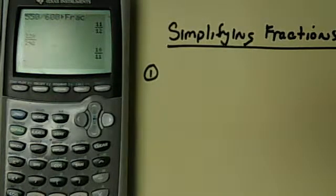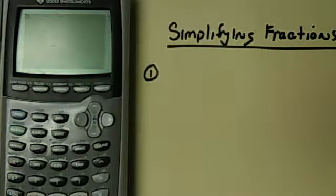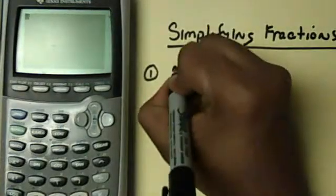Simplifying a fraction means getting that fraction in the lowest term, meaning there isn't a number that can go into the numerator and denominator evenly. So let's say, for example, we had 21 over 35.